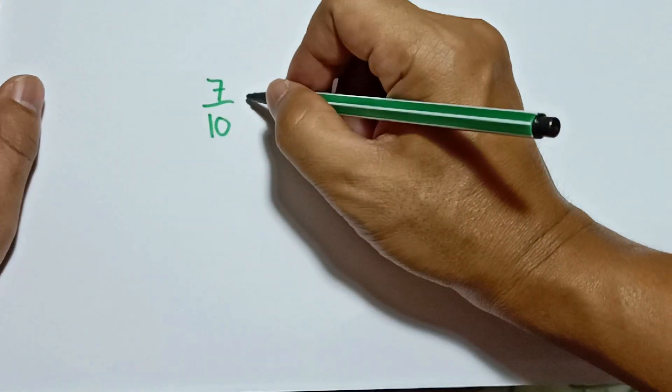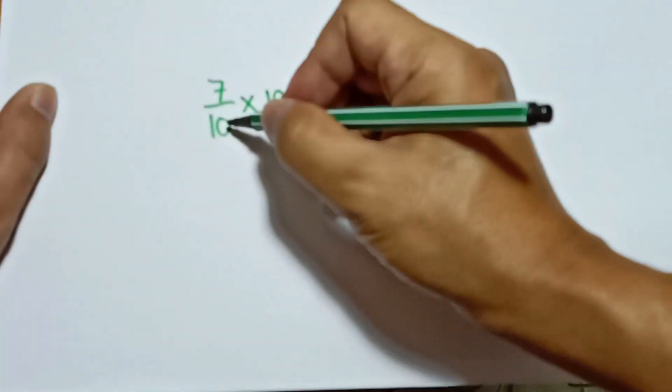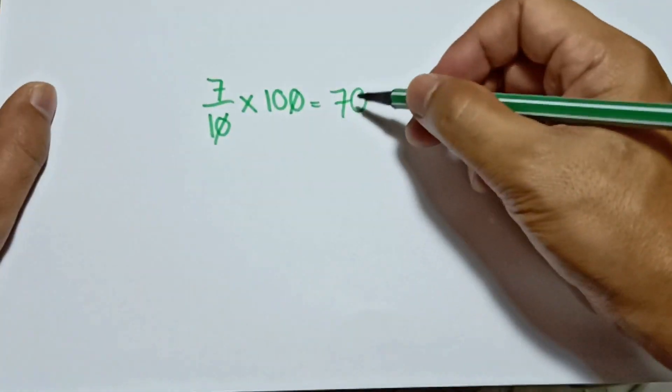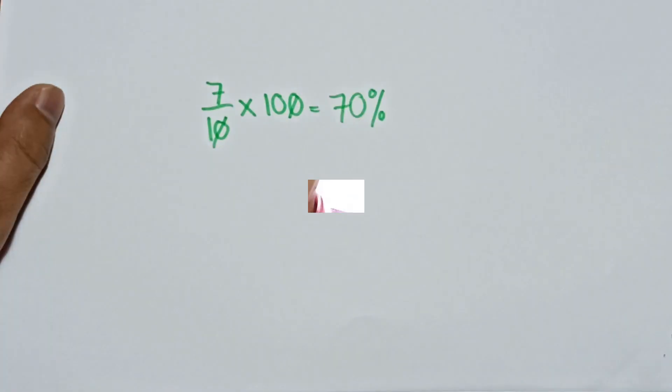7 over 10. All you have to do is multiply this fraction by 100. You can cancel one zero here and one zero there, and then just multiply: 7 times 10 is 70. So 7 over 10 as a percentage is 70 percent. This is Teacher Mel, and welcome back to my YouTube channel. Shout out to all my subscribers and to all the math fanatics out there. Thank you so much.